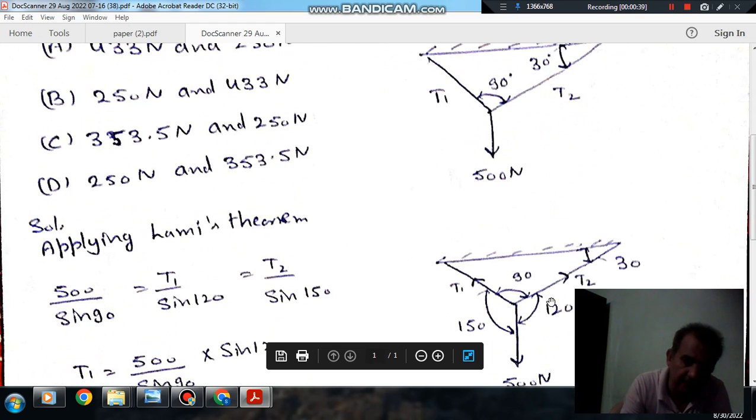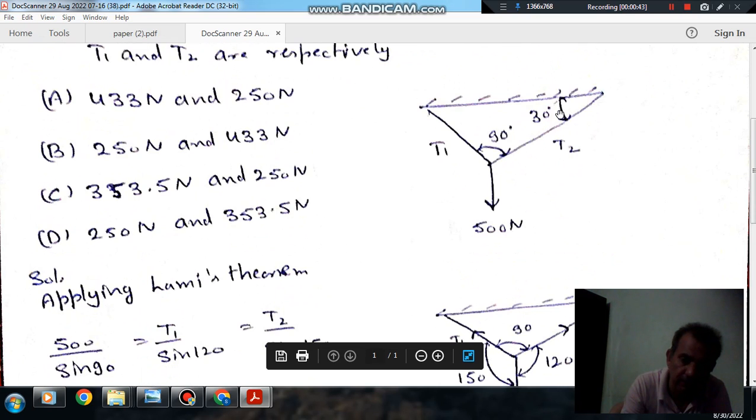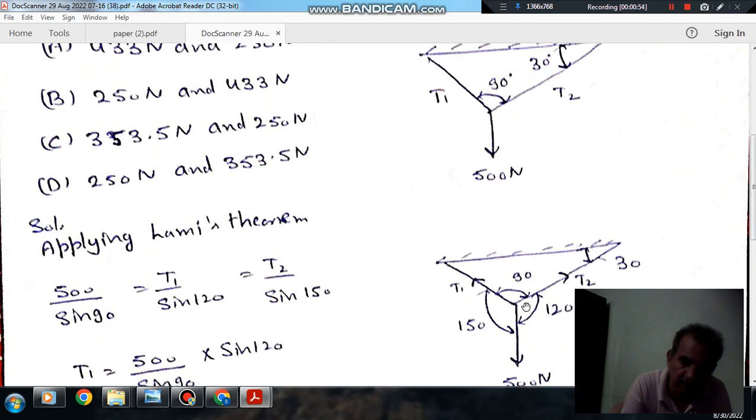These are the directions of tension T1 and T2. This is the figure given. And this angle is 30 degrees and this angle is 90 degrees. So this angle will be 30 plus 90, that is 120.